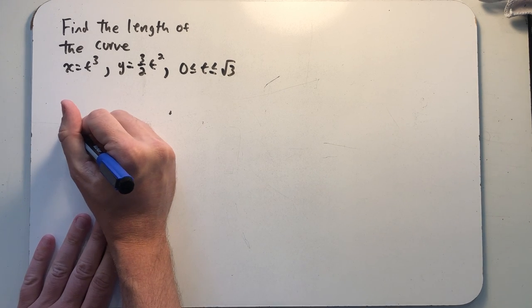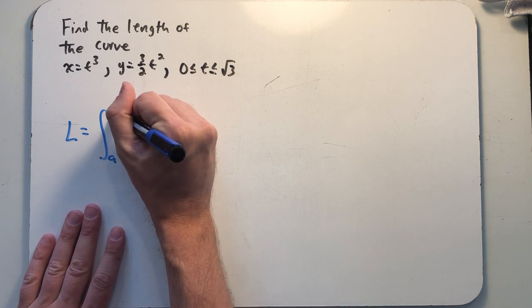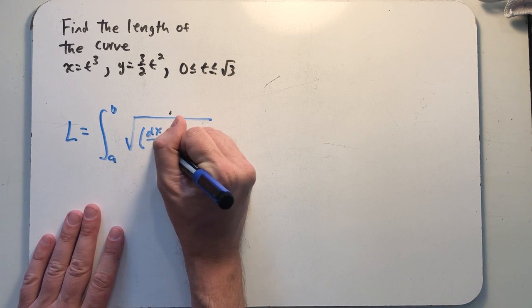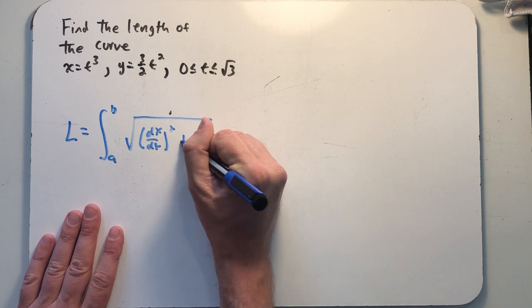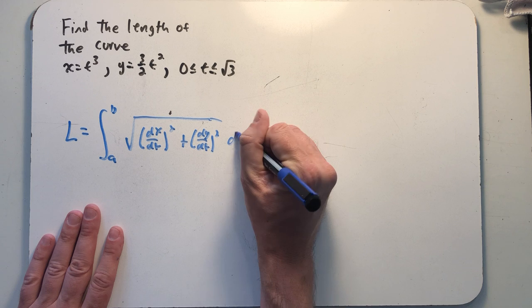So to get going here, we need to remember that to find this length, we're going to be integrating the square root of dx dt squared plus dy dt squared with respect to t.